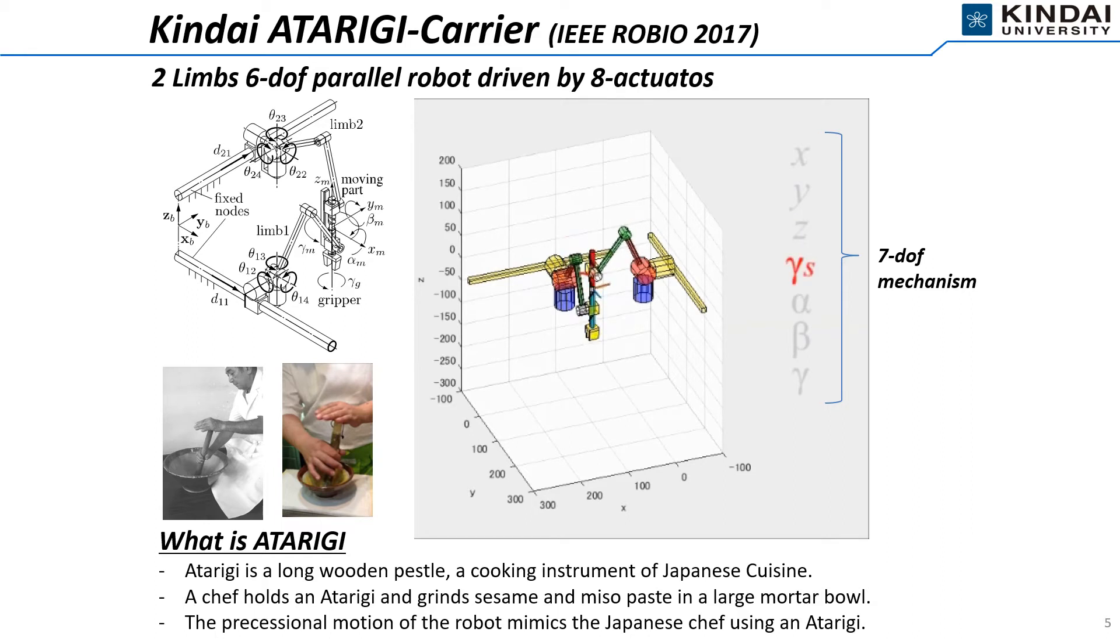Differential screw rotates the gripper. In addition, you can see the moving part is tilting, panning, and rotating by two limbs.